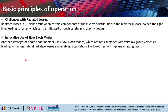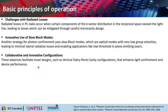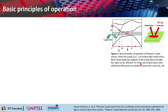One method is to use slow Bloch modes — optical modes with very low group velocities — leading to minimal lateral radiative losses, enabling applications like low threshold in-plane emitting lasers. Novel designs such as vertical Fabry-Perot cavity configurations are also useful in enhancing light confinement and overall device performance. Another aspect is design focus at the gamma point, where mirrors are specifically designed for operation where k-parallel vector is zero, facilitating normal incidence operation.